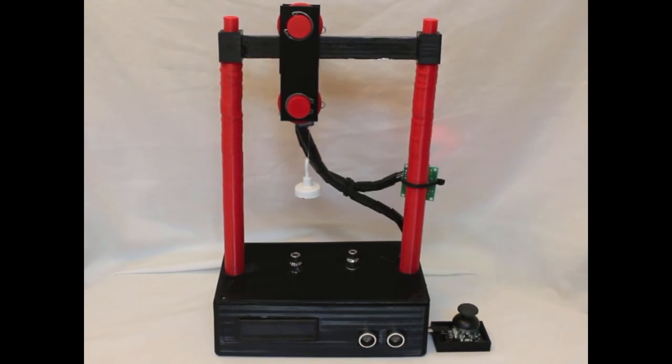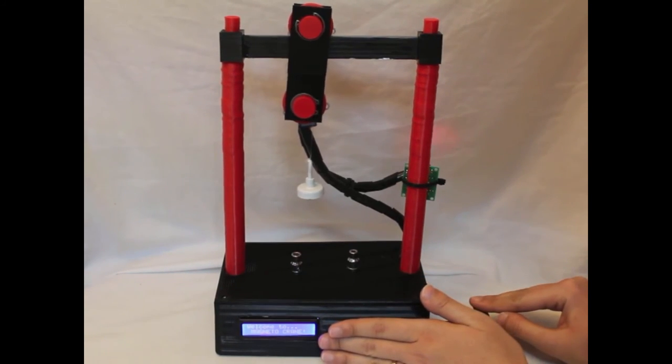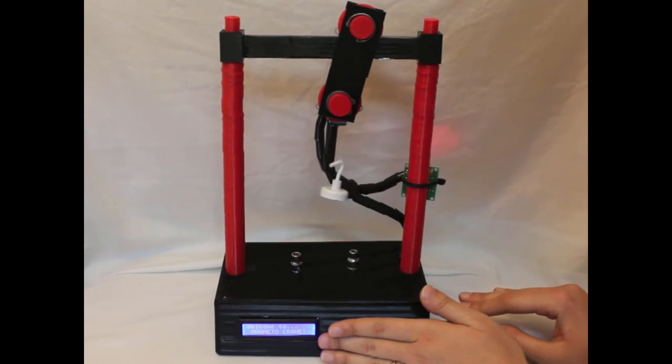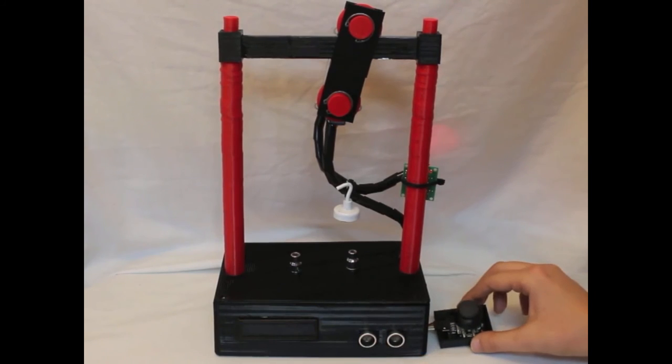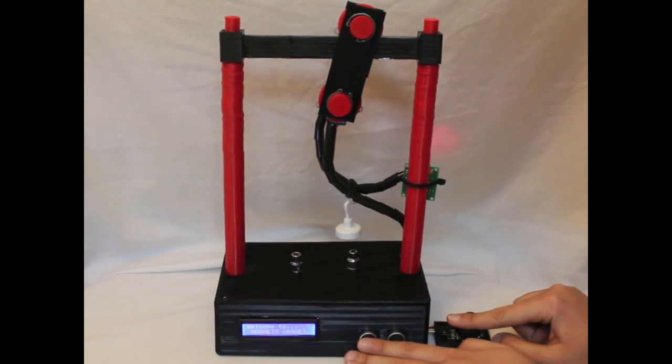Now for a demonstration of the Magneto Crane. When my hand is placed in front of the proximity sensor, the 'Welcome to Magneto Crane' text is displayed. Now you can see the X and Y functionality of the joystick. When I move the joystick down, the pulley releases the magnet in order to pick up some sockets.